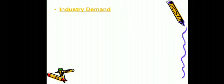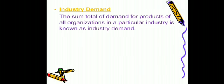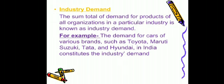Next is industry demand. The sum total of demand for products of all organizations in a particular industry is known as industry demand. All the organizations in a particular industry — their sum total of demand is called industry demand. For example, in the automobile industry, all the brands like Toyota, Maruti Suzuki, Tata, and Hyundai together create industry demand. The sum total of demand for all their cars is your industry demand.